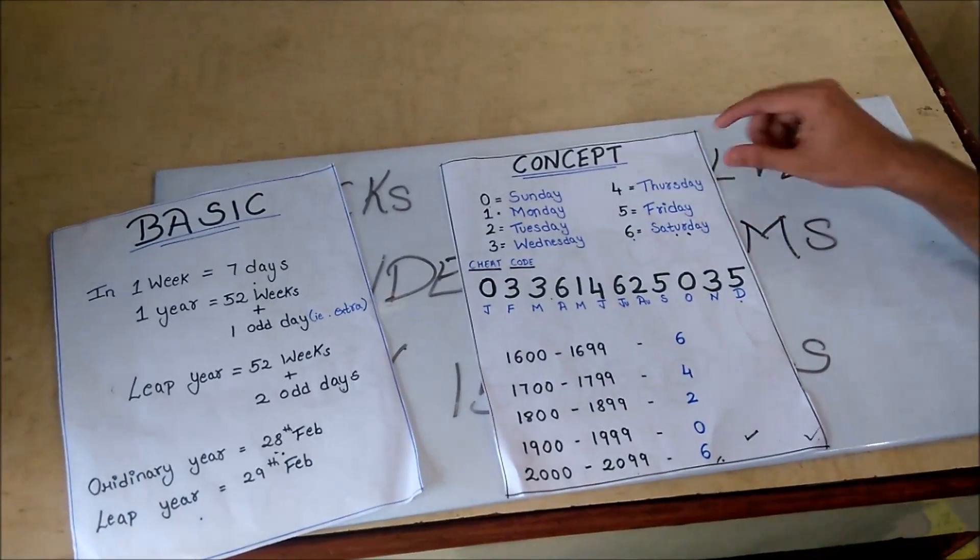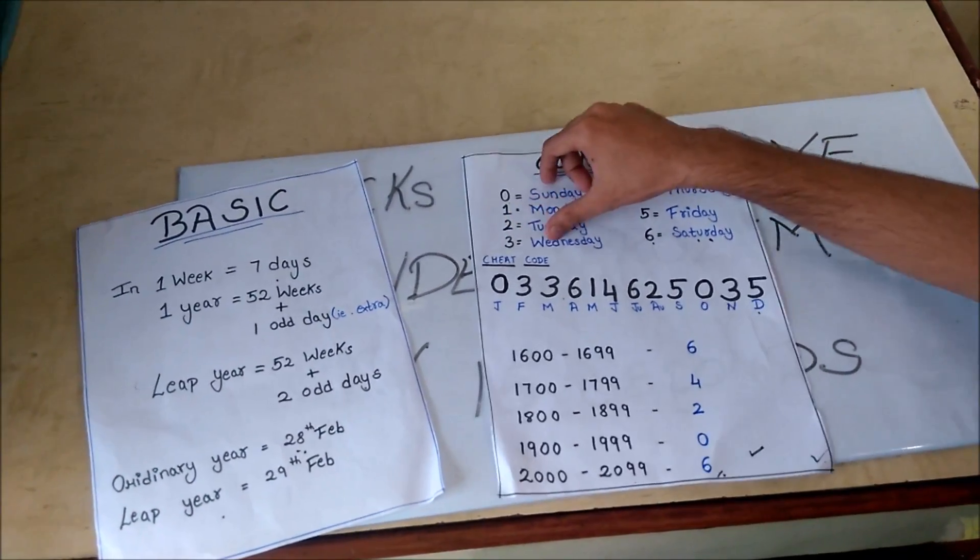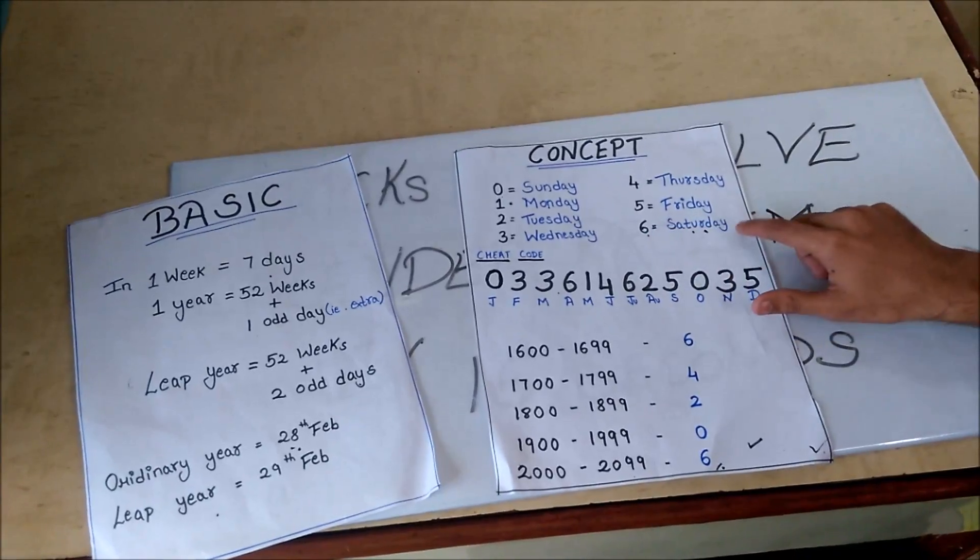Let's see the weekdays. 0 stands for Sunday, 1 stands for Monday, 2 for Tuesday, 3 for Wednesday, and so on. 6 for Saturday.